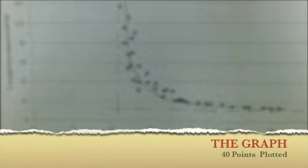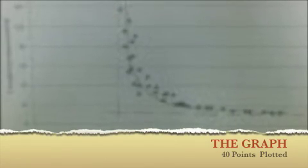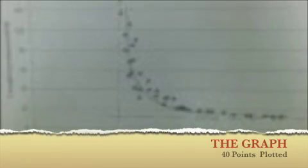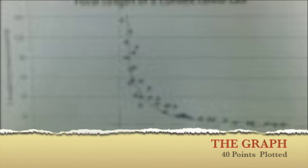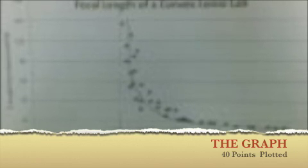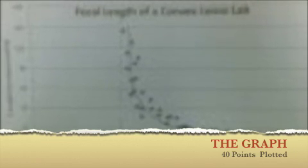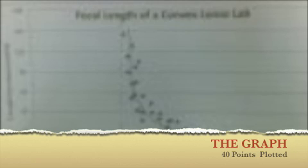On the graph are the 40 points we plotted. When looking at the graph, you can draw the asymptotes, which give you the focal length. The focal length is the point at which, when you place the candle, you no longer get an image on the screen.